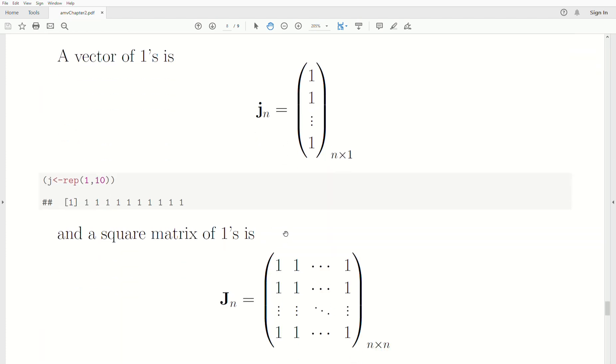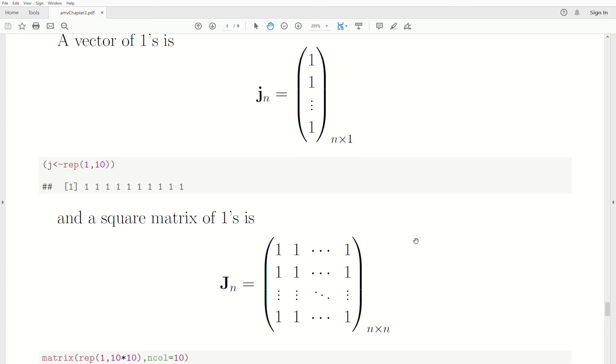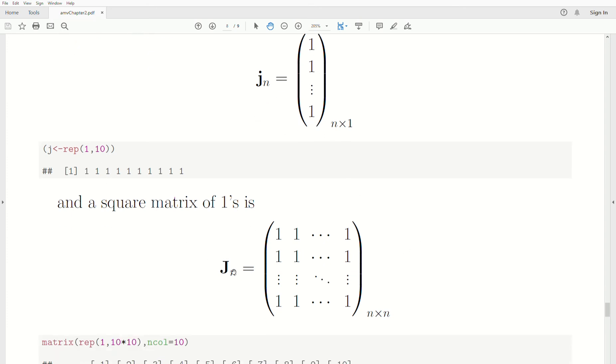Now, the next thing, a vector and a matrix of all ones is sprinkled so much in the theory of linear models. It's important to point these out. Now, we're going to do more with this in later videos, but this is what it is. So little j is just a vector of ones. Capital J is a matrix of all ones.